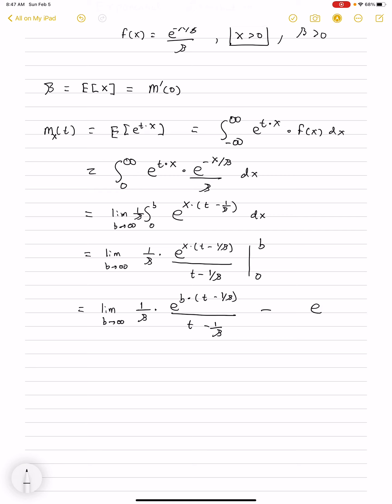And then, lastly, we're going to subtract by when we plug in 0 for x. So, this will be e to the 0 divided by t minus beta times by 1 over beta.